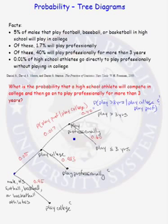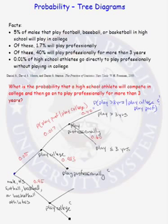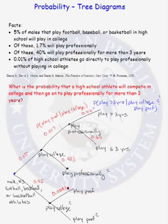The last fact tells us that 0.01% of high school athletes go directly to play professionally without playing in college. So, 95% of those that play football, baseball, or basketball in high school do not play professionally, but of those, some will play professionally and some will not. The probability of going directly from high school to play professionally is 0.0001, and the probability that they do not play professionally is 0.9999.